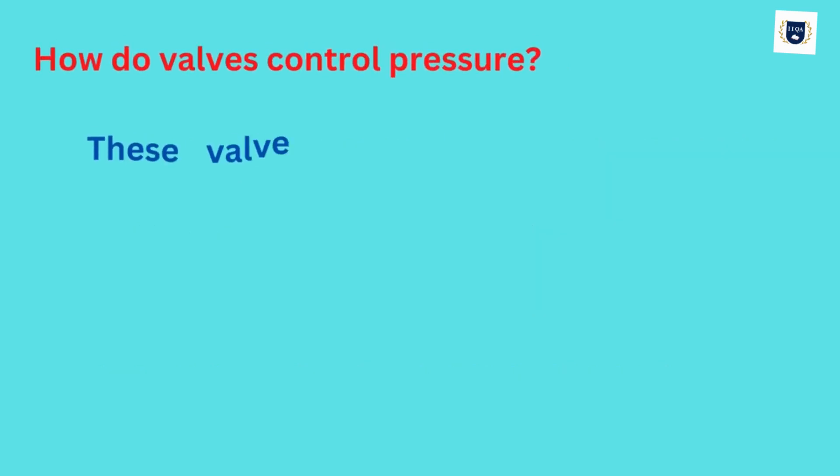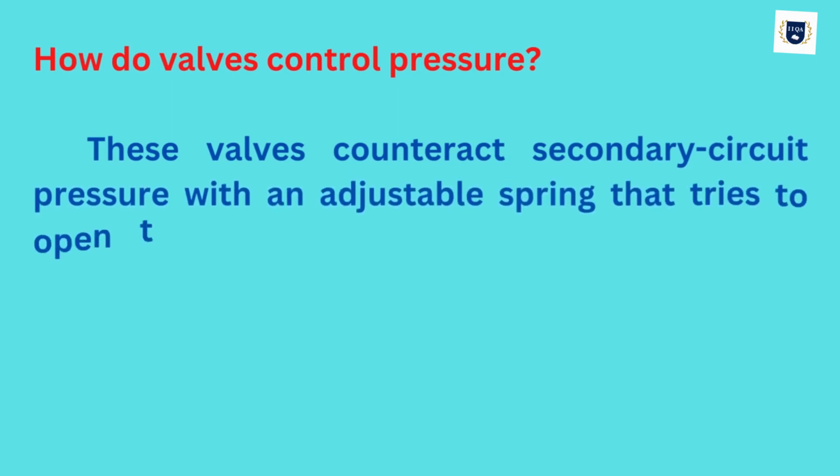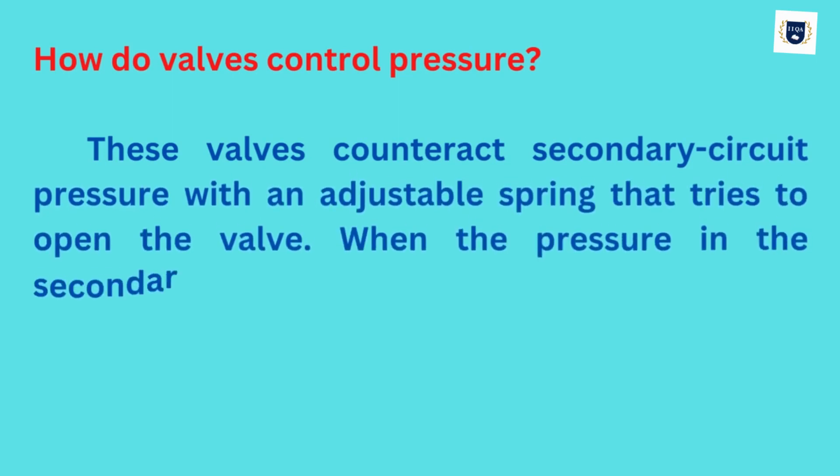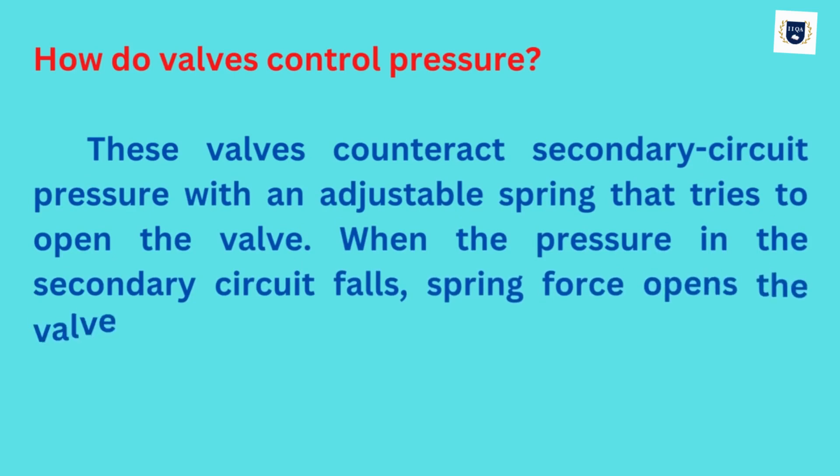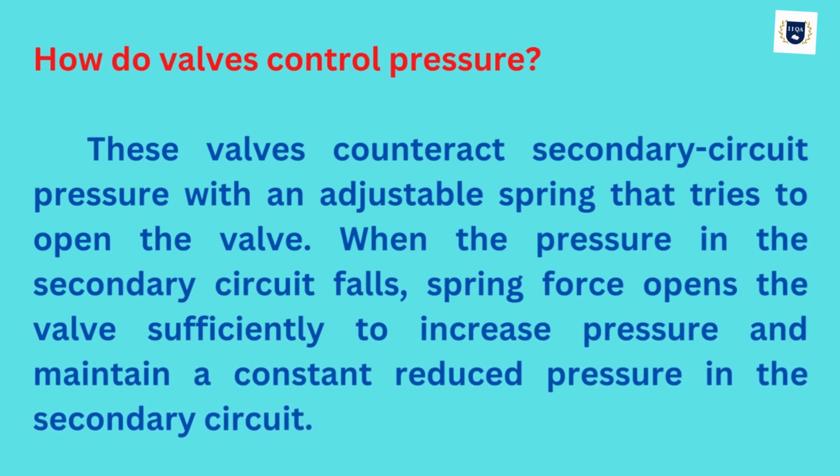How do valves control pressure? These valves counteract secondary circuit pressure with an adjustable spring that tries to open the valve. When the pressure in the secondary circuit falls, spring force opens the valve sufficiently to increase pressure and maintain a constant reduced pressure in the secondary circuit.